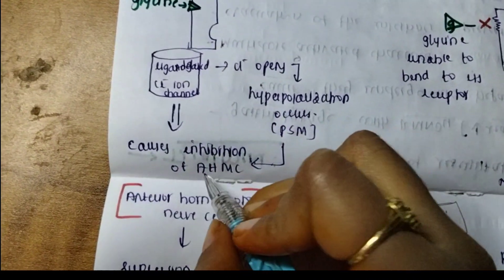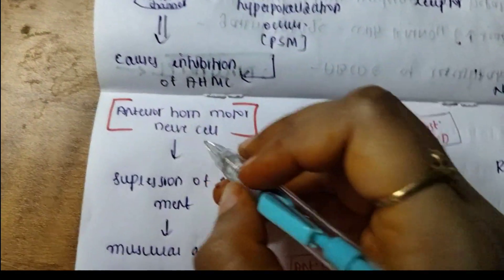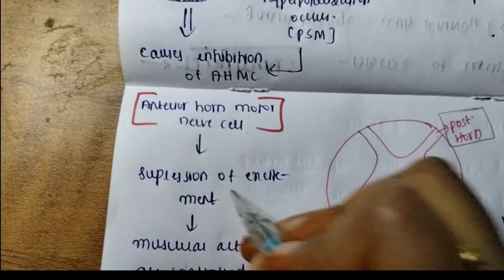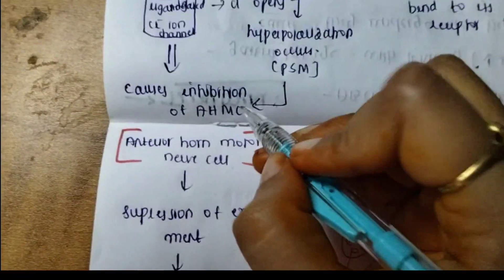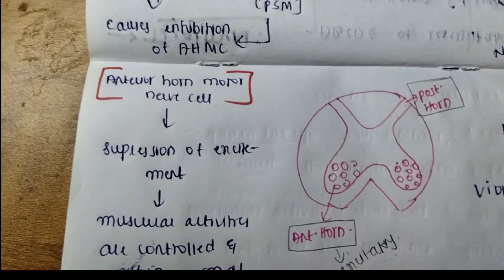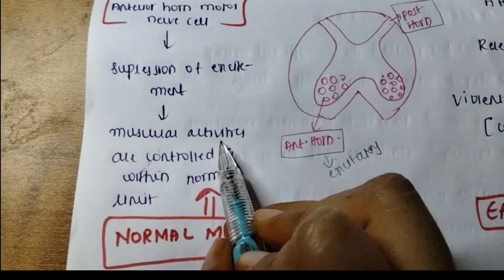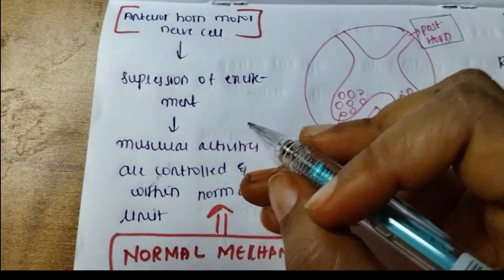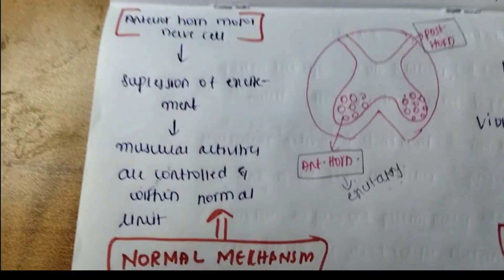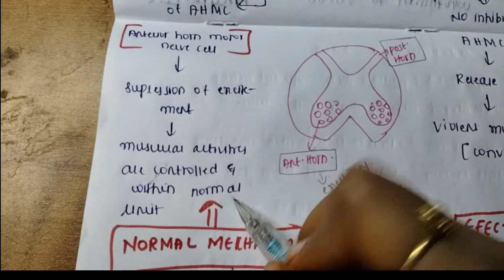Because of this chloride outflow, hyperpolarization occurs in the postsynaptic membrane, causing inhibition of the anterior horn motor nerve cell. This inhibition causes suppression of excitation — since the AHMC is excitatory, inhibiting it suppresses excitement, leading to a decrease in muscular activity within normal limits. So because of glycine inhibiting the AHMC, you can control your muscular activities. This is the normal mechanism.